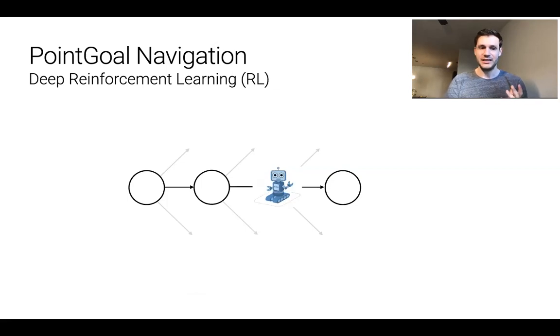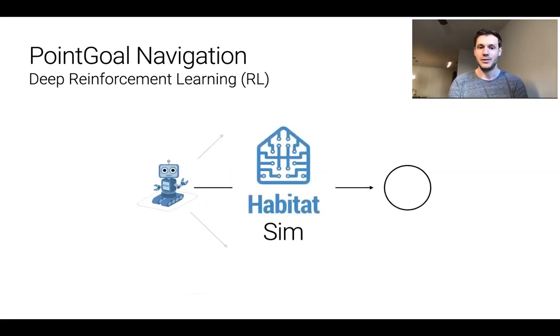In supervised learning we have some data set and we can train the agent directly on that. But in reinforcement learning we now need to be able to evaluate the agent within the environment to collect the data necessary to train it. The second thing is that this diagram hides a lot of the complexity. When the agent's in the state and takes an action how do we determine where it ends up? And then once it's there how do we determine what its sensors will look like in that state? So this is where HabitatSim comes in.